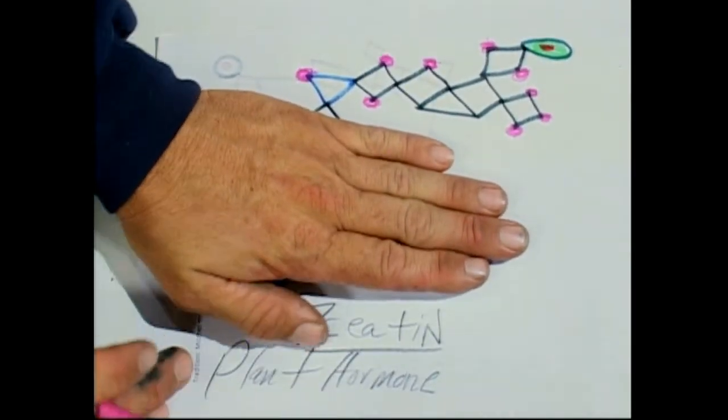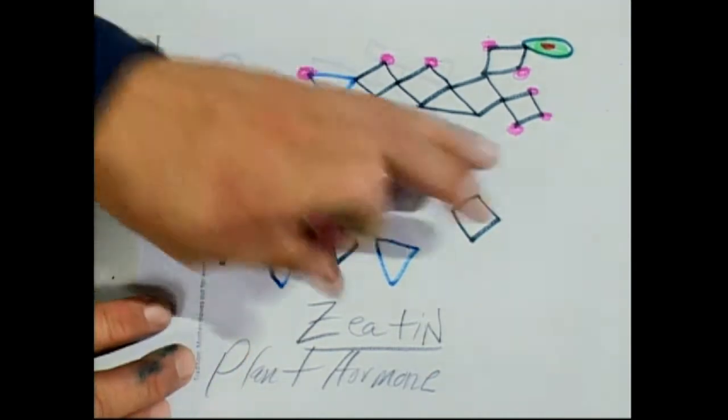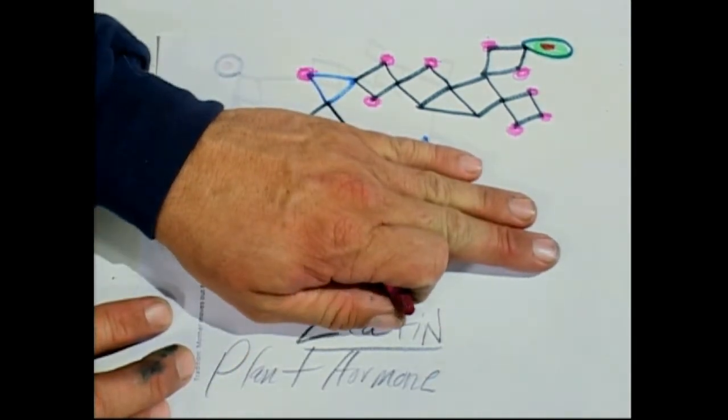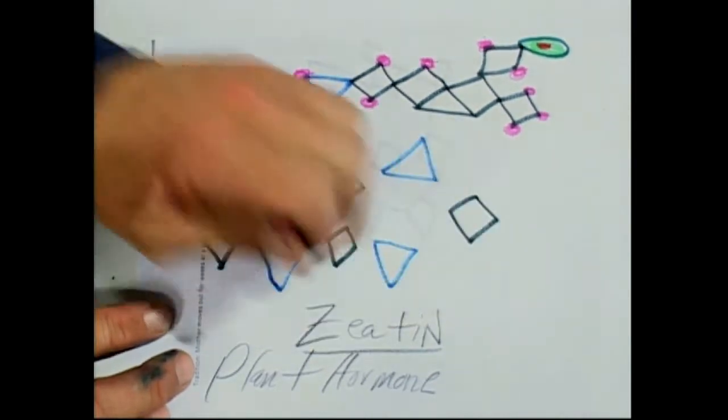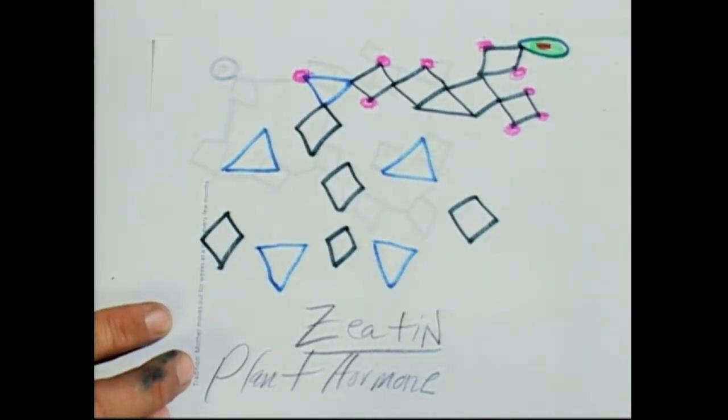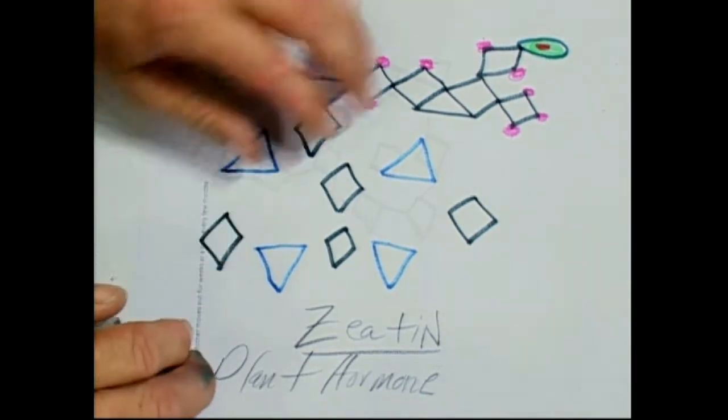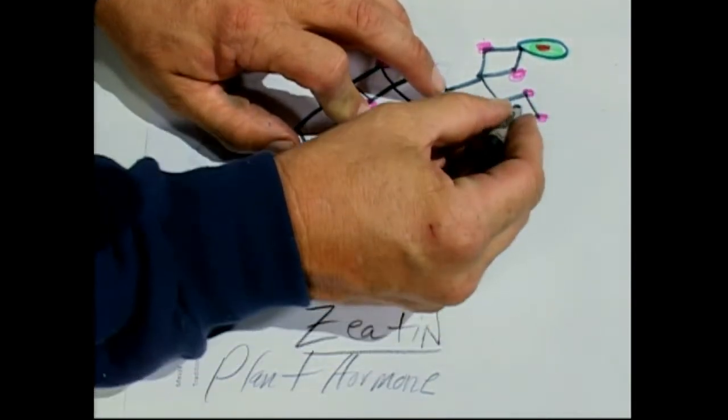This is going to be the adenine part, the double ring down there. Exactly like the nucleic acid. ATP. Cyclic AMP. Adenine. Really popular. So let's take a minute.